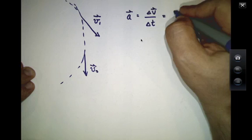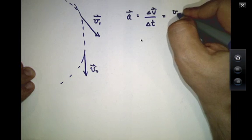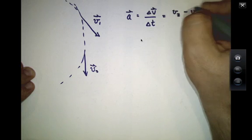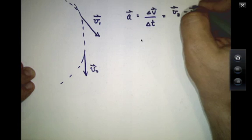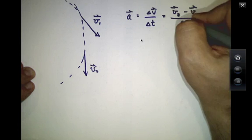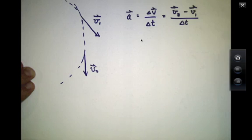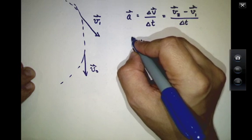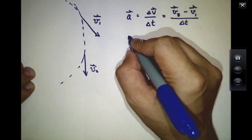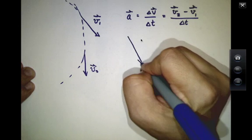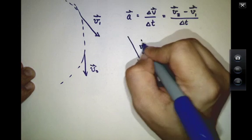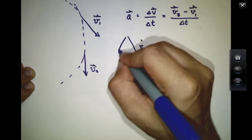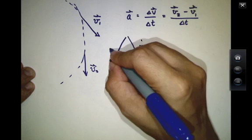Delta V is V2 minus V1 over delta T, where delta T is just T2 minus T1. If I think about how to compute V2 minus V1, I can put V1 here and V2 here.